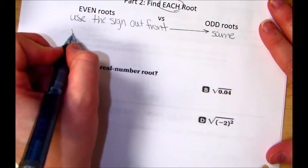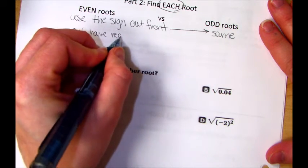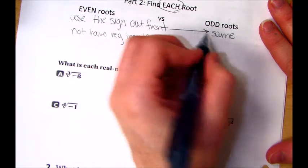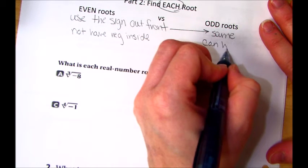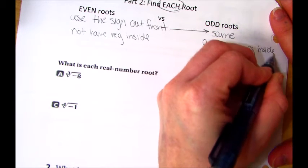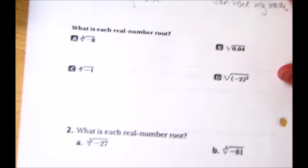Even roots, you cannot have a negative inside. Odd roots, you can have a negative inside. The square root sign, or the radical sign, will already be drawn for you.